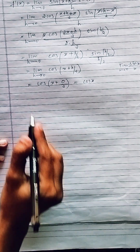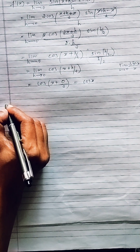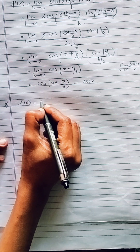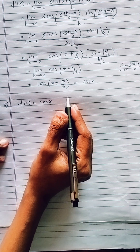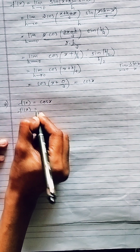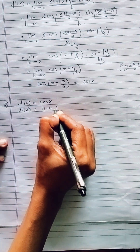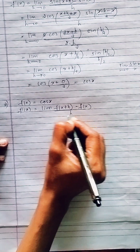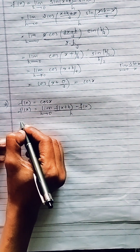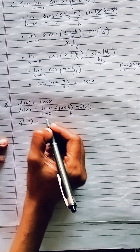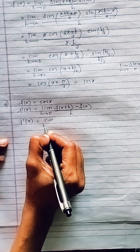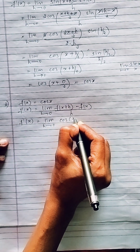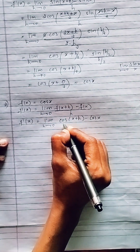The next question similarly asks: find the derivative of f(x) = cos x using first principle. Here also we consider f'(x) as limit h tends to 0 of f(x+h) minus f(x) divided by h. Given f(x) = cos x, f'(x) becomes limit h tends to 0 of cos(x+h) minus cos(x) divided by h.